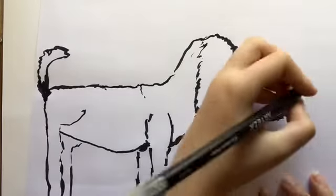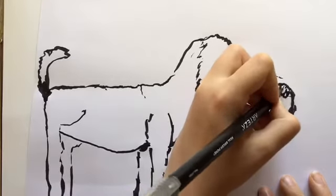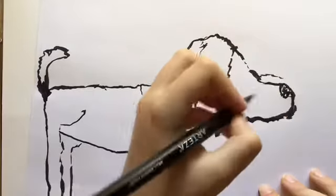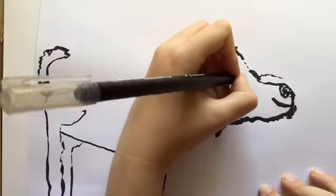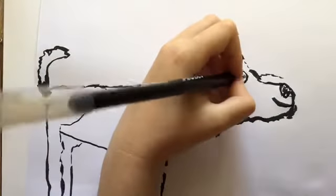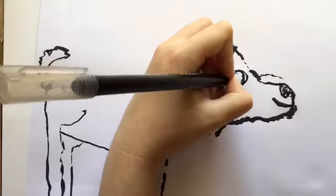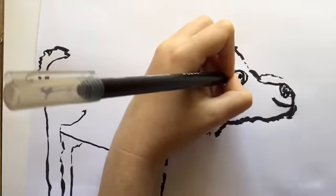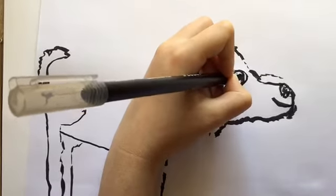Now onto the detail. So our cocker spaniel is going to need a nose there. I'm just going to give him a mouth. Now the eye is a key feature to our cocker spaniel, so it needs to be textured.